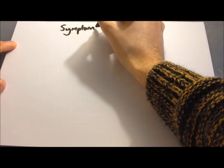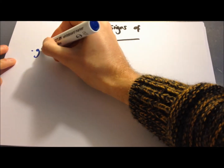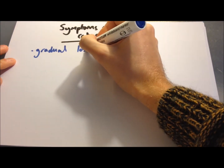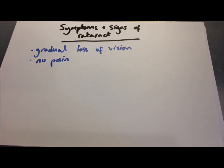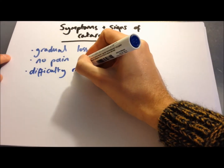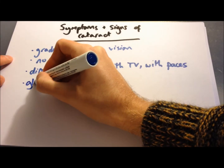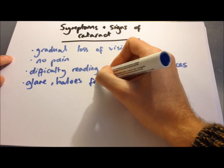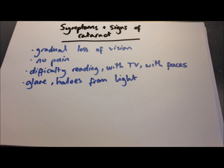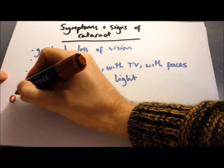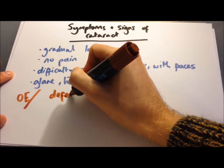So how is a patient going to present with a cataract? Normally they'll come with a gradual, painless loss of vision — a steady decline over time. They might notice difficulties with reading, watching TV, or recognising faces. They might also notice glare and halos from light, because of the impaired refractive ability of the eye. On examination, you might notice a defect in the red reflex caused by the opacities.